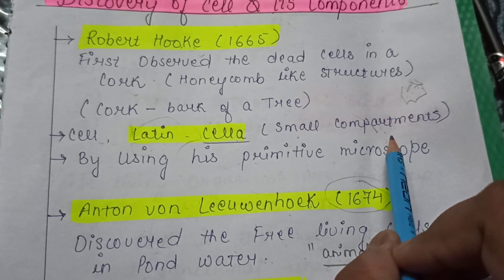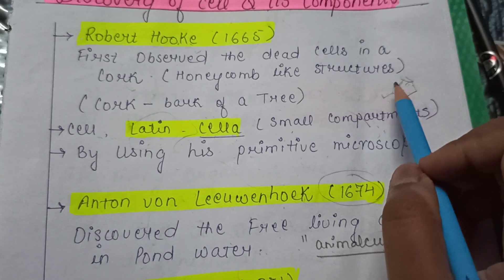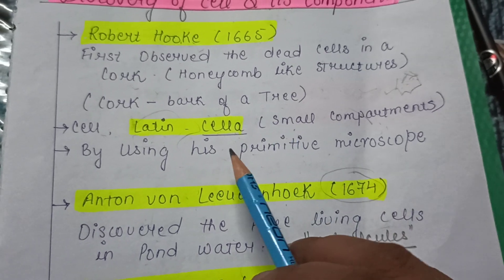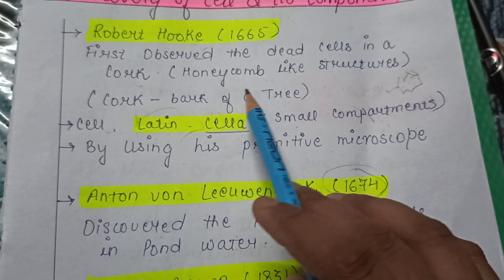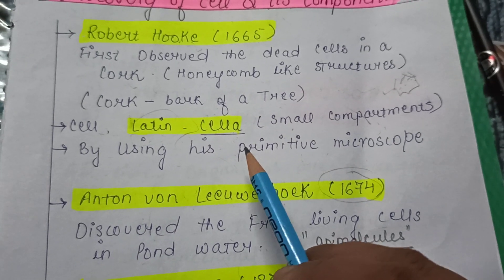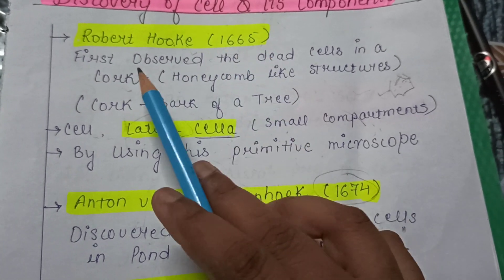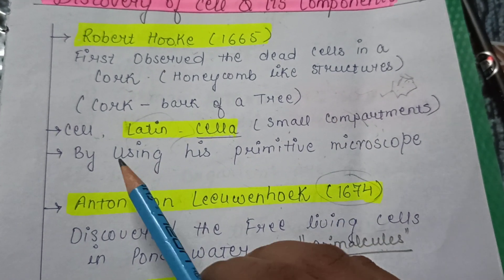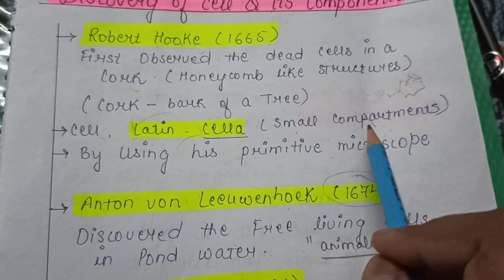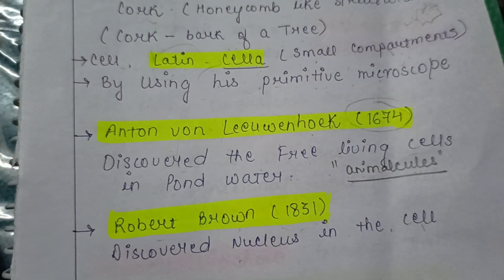The term 'cell' is derived from the Latin term 'cella,' which means small compartments — essentially, a little room. Robert Hooke observed these small honeycomb-like structures through a self-designed simple microscope. In the year 1665, he observed a dead slice of cork and found these small honeycomb-like structures, naming those compartments as 'cell,' meaning small room-like structures, using his primitive microscope.